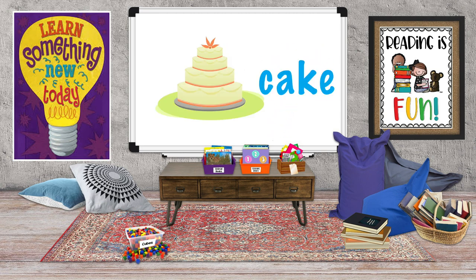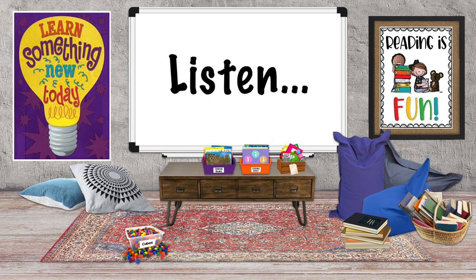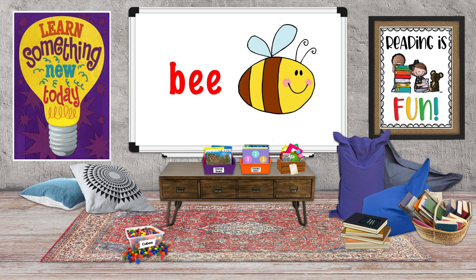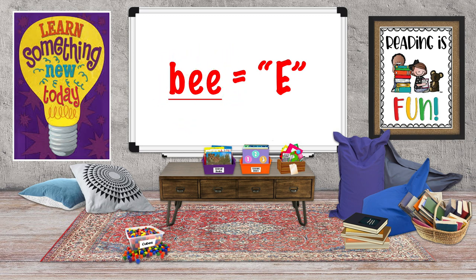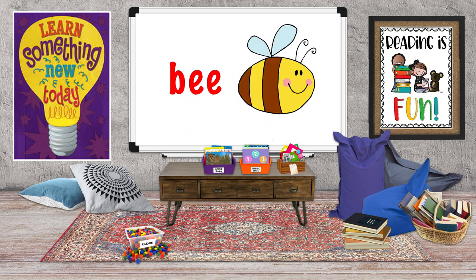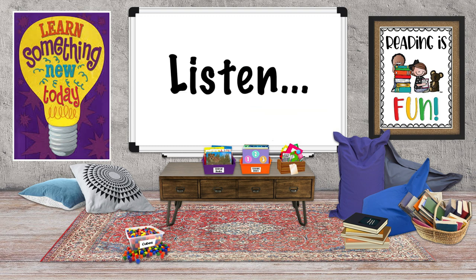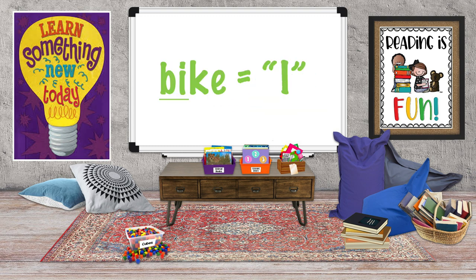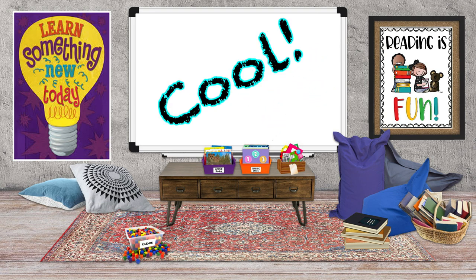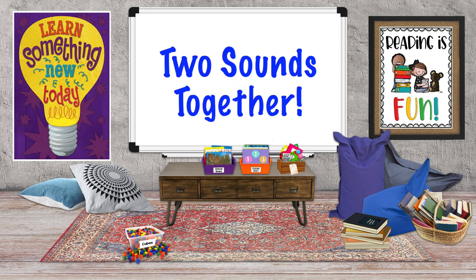Now long E — listen to the word 'bee.' Long E makes the sound of the letter E. Now long I — listen to the word 'bike.' Long I sounds like the name of the letter I. Here's a cool bit of trivia: the sound of long I is actually two sounds together.